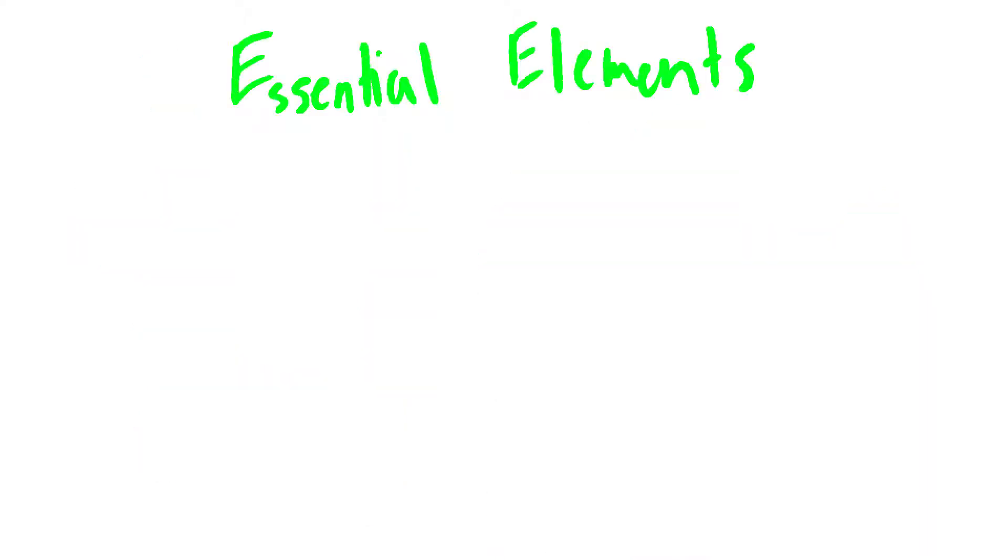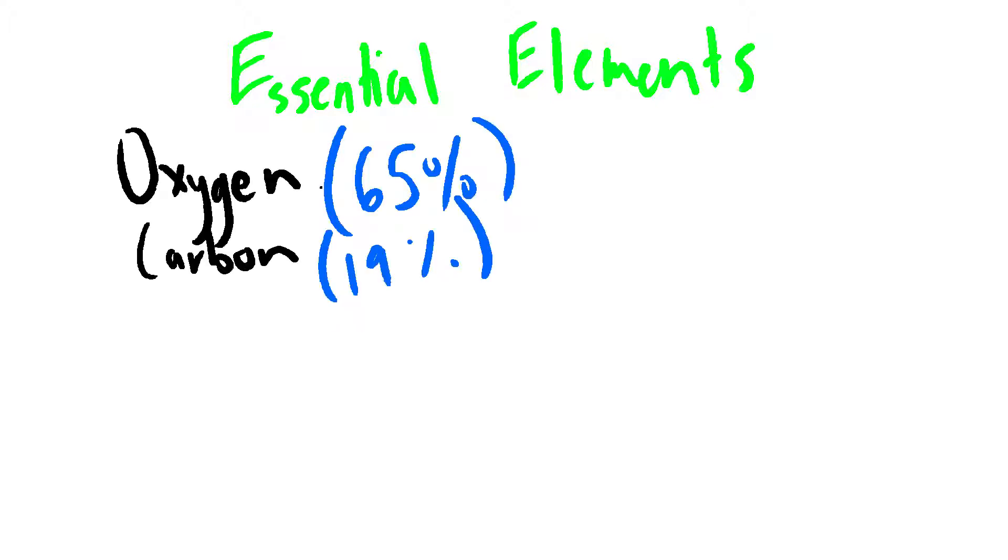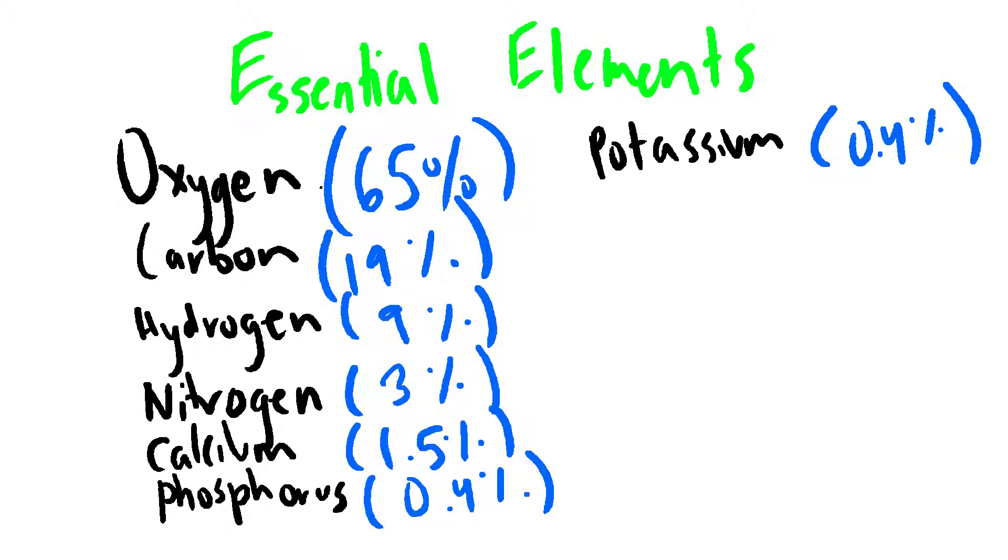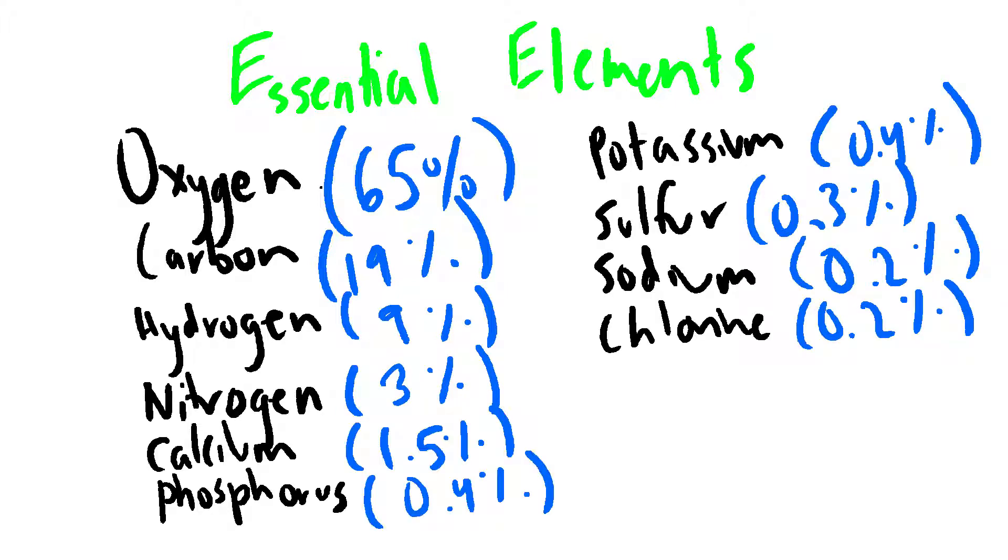Essential elements are elements that an organism needs to survive and reproduce. In humans, the distribution looks like this: oxygen, carbon, hydrogen, nitrogen, calcium, phosphorus, potassium, sulfur, sodium, chlorine, and magnesium.